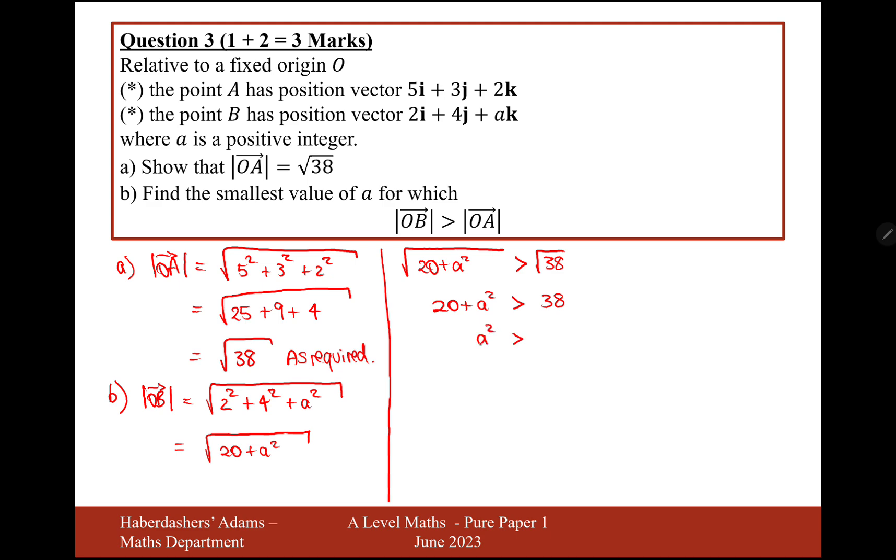We're going to then take away 20 to the other side, you get 18, and then we're going to square root, so a has to be bigger than √18. If a is a positive integer, so integer means whole number, 4 would give us the square root of 16. We want it to be bigger than the square root of 16, so therefore a needs to be 5.